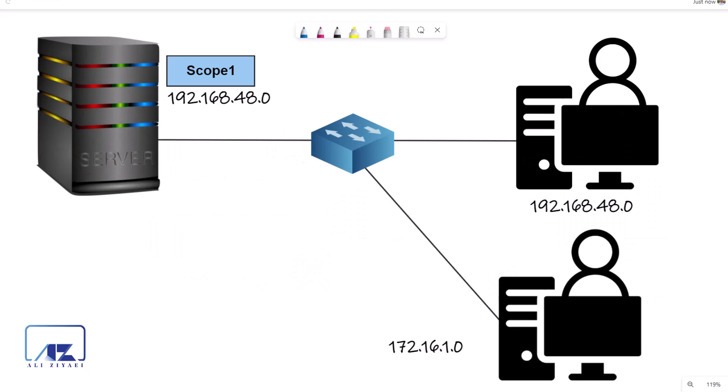Imagine a scenario where you need to add a new network or a new IP range to an existing environment. Say you have a network with the 192.168.48.0 IP range and a DHCP server on the same network with one scope for that range. DHCP can start leasing IP addresses with no issues. But if you need to add more computers or clients, or if you have more clients than the number of available IP addresses in your scope, some clients will not be able to get an IP address.